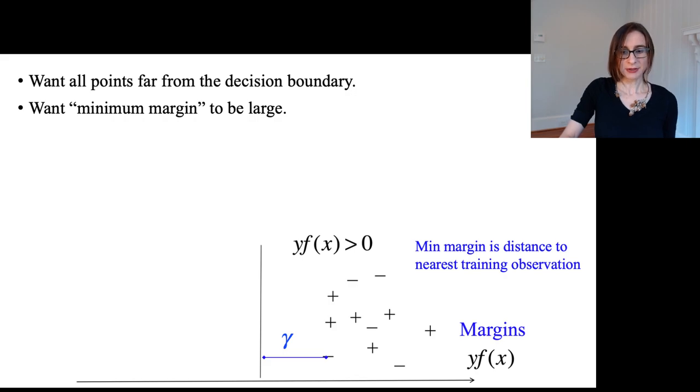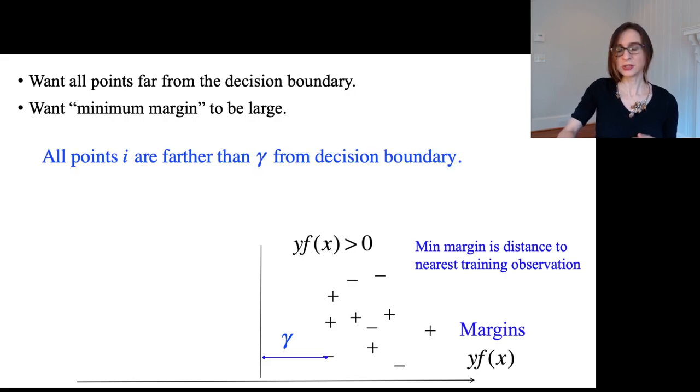The way support vector machines are formulated is that you say we'll constrain all points to be farther than gamma from the decision boundary and then we will maximize gamma. So in that way, we're just going to force all the points to be at least some distance gamma and we'll maximize that gamma.